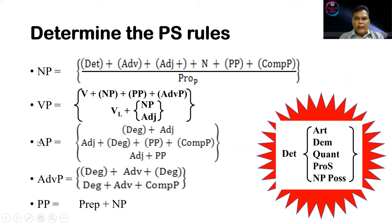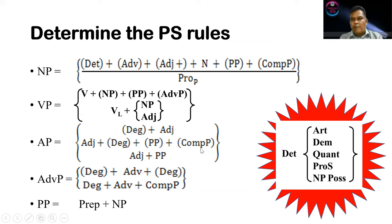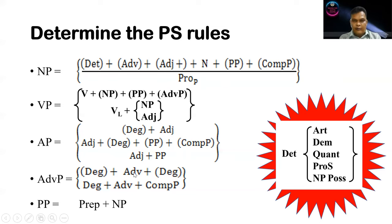For adjective phrase, it can be composed of only an adjective as the main element, and it can be accompanied by adverb of degree, prepositional phrase, or complement phrase. Adverb phrase can be composed of only an adverb, which can also be accompanied by adverb of degree and complement phrase. The last one is prepositional phrase, which can only be composed of a preposition and a noun phrase.